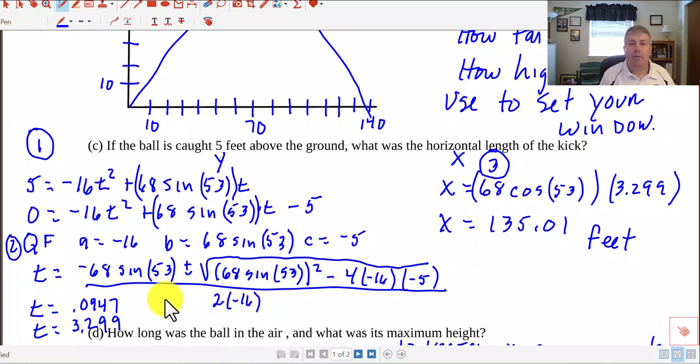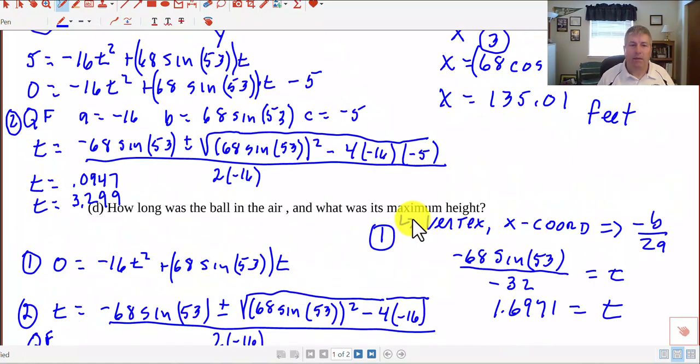So now I've got my two times, but now I need to find the horizontal length. I need to find the x. So I'm going to take the second time and substitute that into my x equation. So that's the third thing I do - solve for the x. So x equals 68 cos(53°) times 3.299. Be sure not to multiply your angle by the 3.299. It's the whole value, so you could even put that 3.299 in front. We put that in our calculator and we get x equals 135.01 feet.